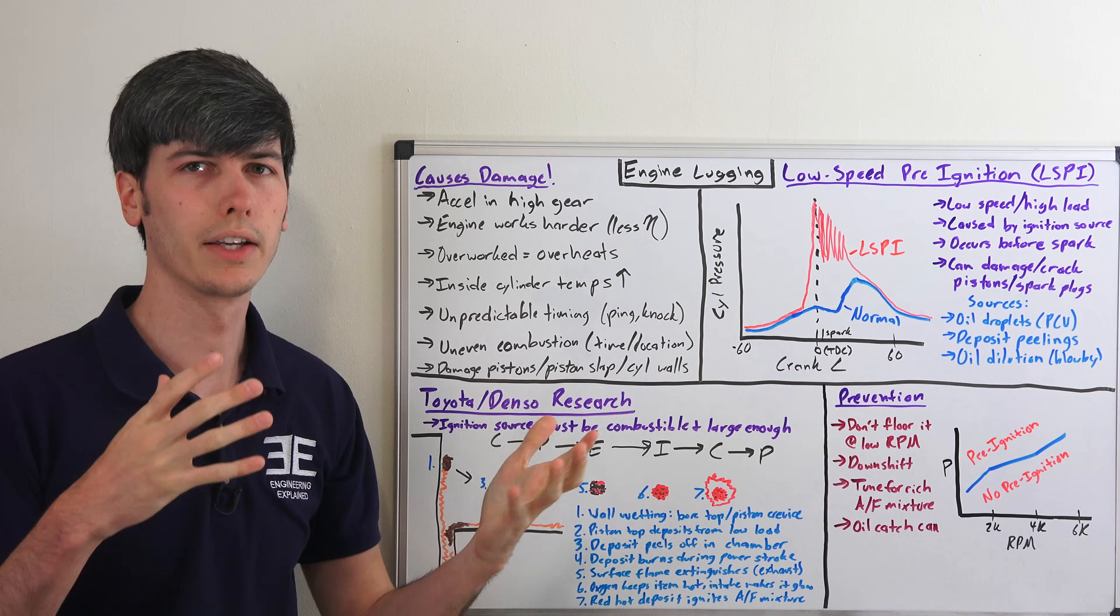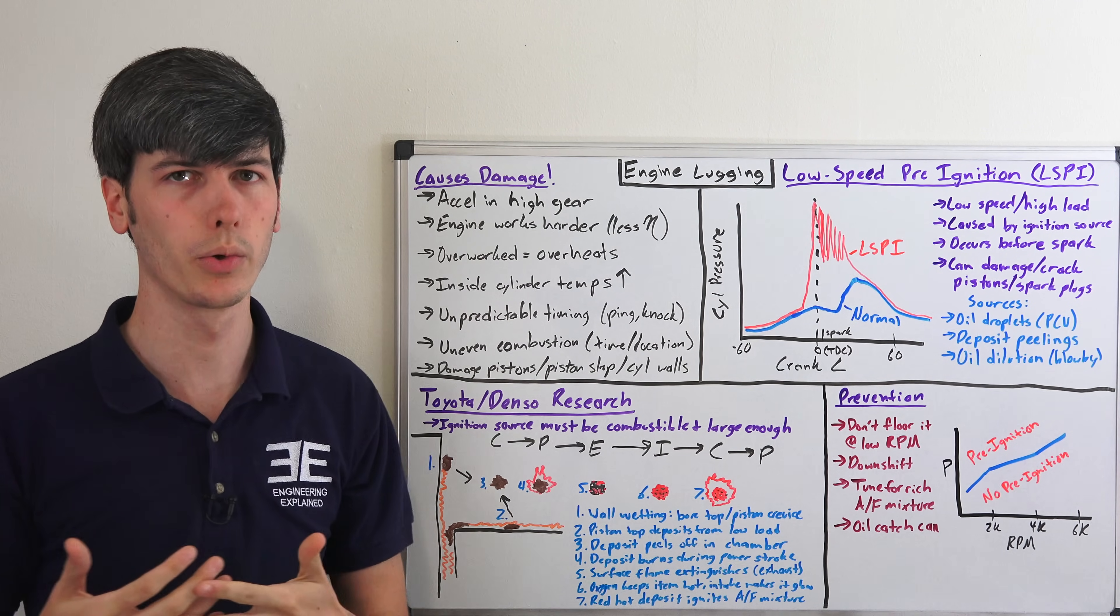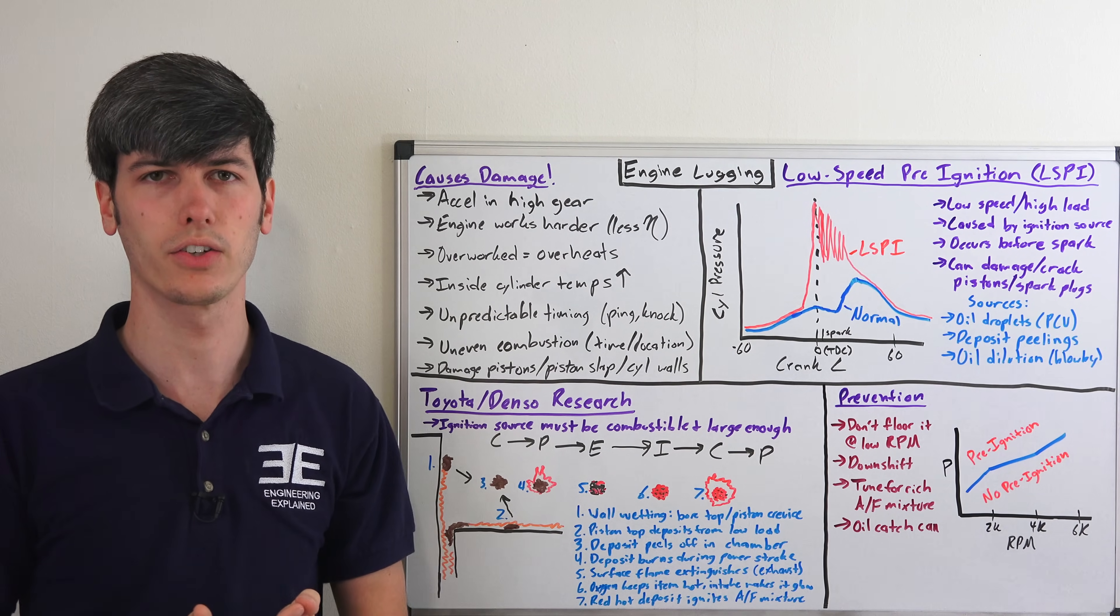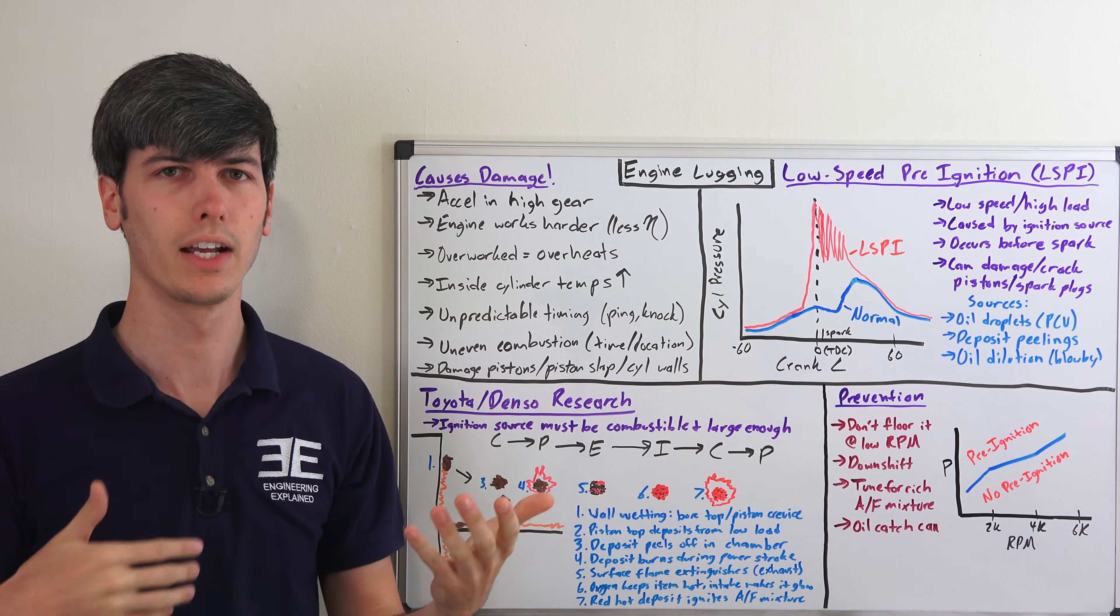First off, putting it in a high gear and trying to accelerate is kind of counterintuitive because you're going to have less wheel torque as a result of the gearing disadvantage. So obviously it makes sense to downshift if you're trying to accelerate.